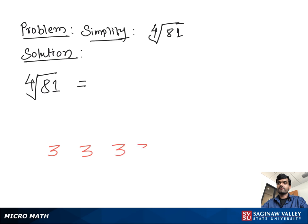As we can see, if we multiply three times three times three times three, that is equal to 81. So our final answer is three.